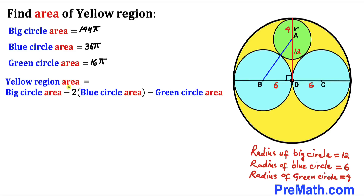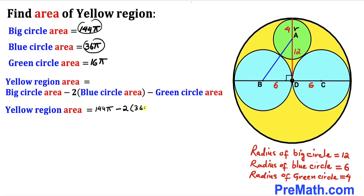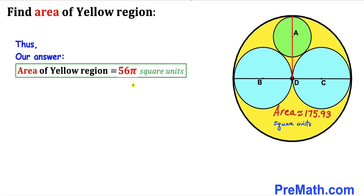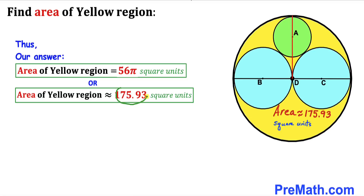Now for the final step: the area of the yellow shaded region equals the area of the big circle minus 2 times the blue circle area minus the green circle area. That is 144π − 2 × 36π − 16π = 144π − 72π − 16π = 56π. So the area of the yellow shaded region is 56π square units, which is approximately equal to 175.93 square units.